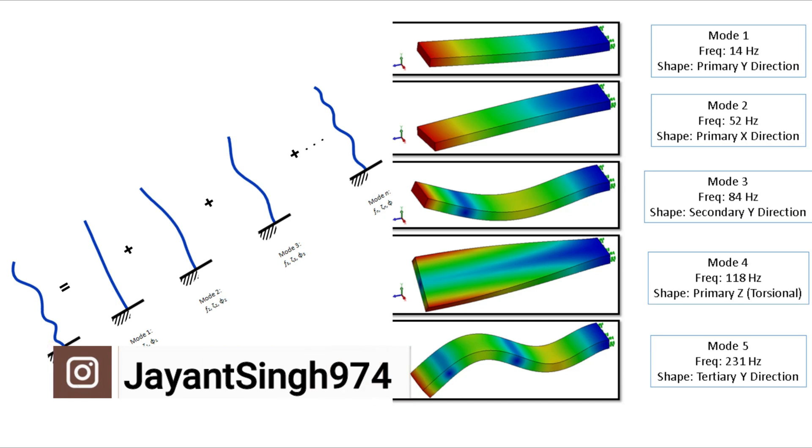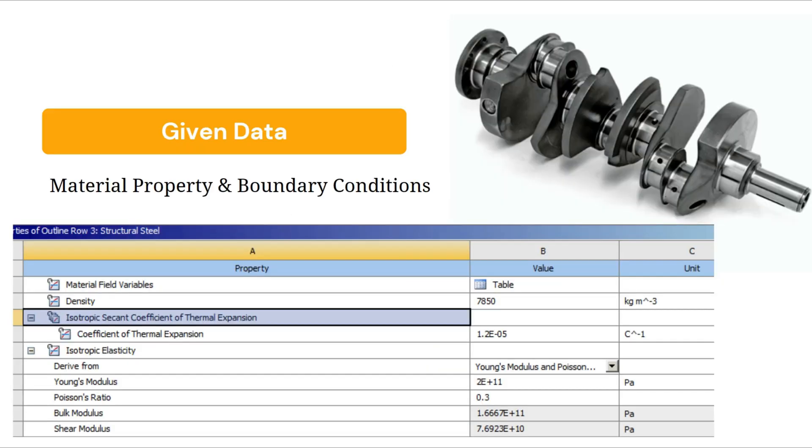There are mode shapes due to the natural frequencies. We all understand what are the mode shapes. Mode shapes are the behavior of the internal arrangement of this subject or body due to the natural frequencies. Here mode one, mode two, mode three, mode four, mode five. We can create lots of modes, we can plot more than five or less than five depending on our requirement. But generally we have six degrees of freedom, so we will consider at least six mode shapes to decide the behavior of the product or subject.